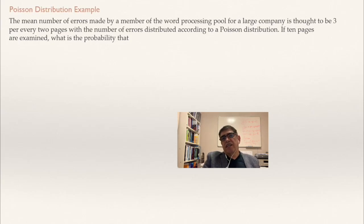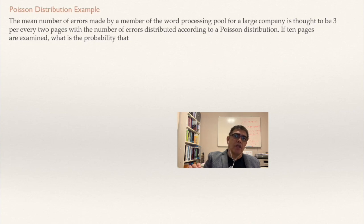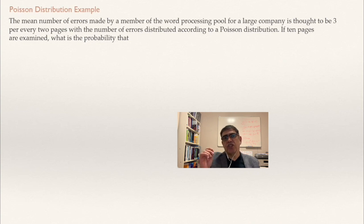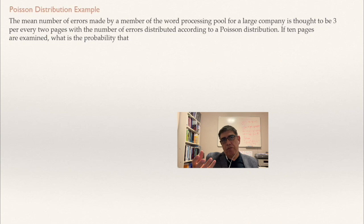I will be explaining what are the elements that always appear in every Poisson distribution problem. I will also be explaining how to solve this Poisson distribution problem and how to obtain the solution using tables. This is the classical way.